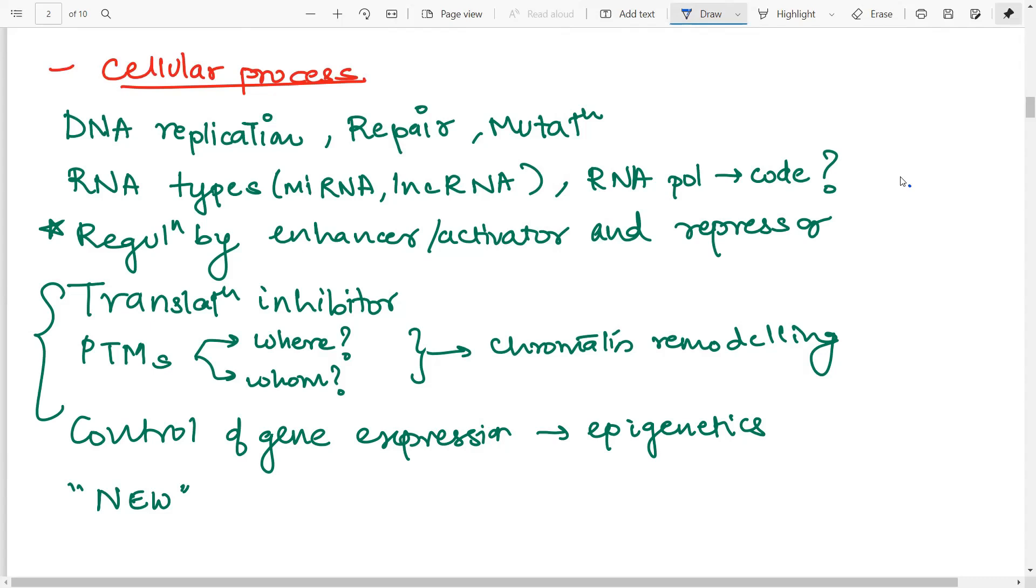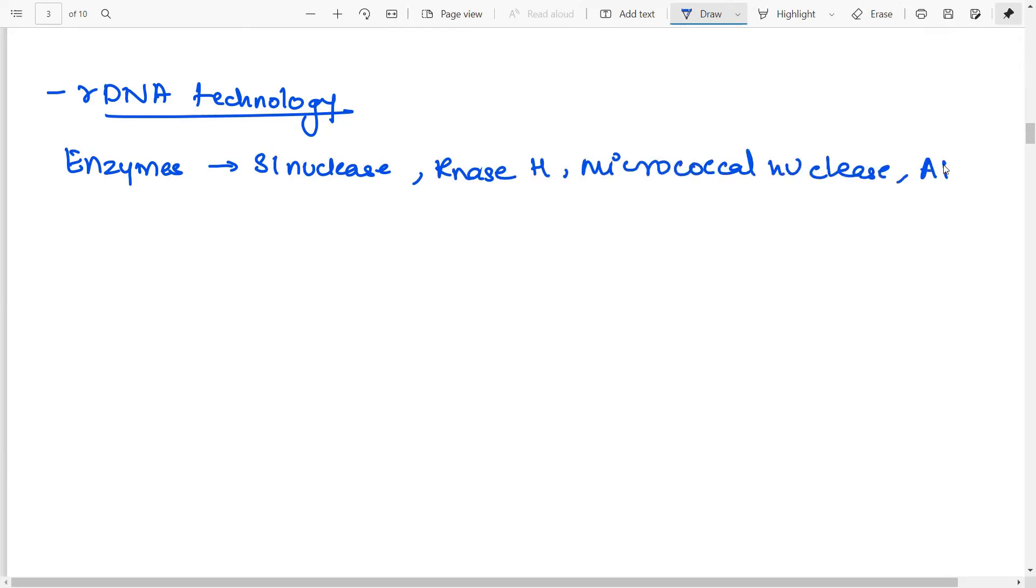Now, the last topic that I will do here is the rDNA technology. The other branches I will cover in the next video. So, let's move on to our last section that is the rDNA technology. Again, extremely important unit. And this, you have to do everything. So, what you need to do is all the enzymes that are involved in rDNA technology. That is, you have to do the S1 nuclease. Then RNase H, micrococcal nuclease. Then you have your alkaline phosphatase, ligase, etc. All of these have to be done in detail.